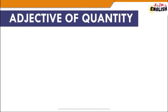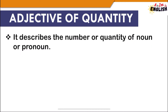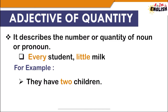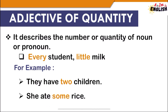Next is adjective of quantity, which describes the number or quantity of a noun or pronoun — such as 'every student' or 'little milk.' Adjective of quantity answers the questions 'how much' and 'how many.' For instance, 'they have two children' answers how many children. 'She ate some rice' answers how much she ate.